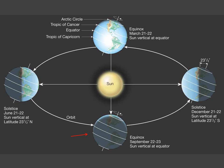In late September, on the Northern Hemisphere autumnal or fall equinox, once again the sun shines equally on both the Northern and Southern Hemispheres, and the days and nights have roughly the same duration.